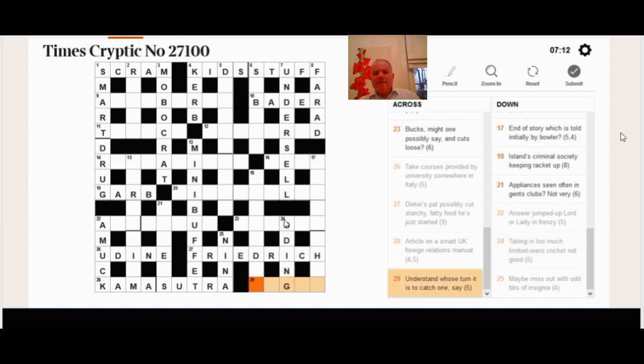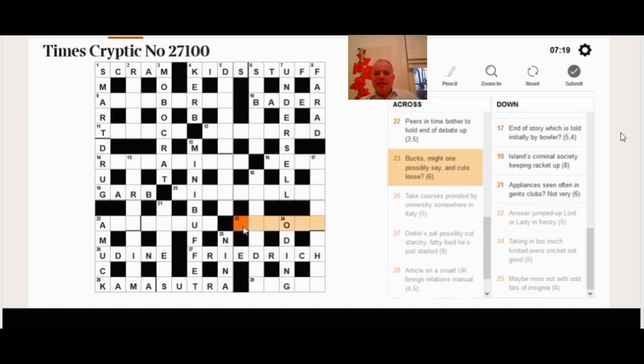24 now. I mean here, taking in too much, limited overs cricket, not good. Beautiful surface. And the definition is taking in too much. And the remarkable answer is ODing. Not actually ODing as it looks like, but ODing, overdosing.